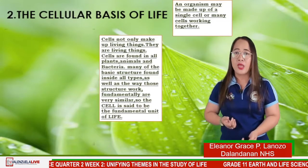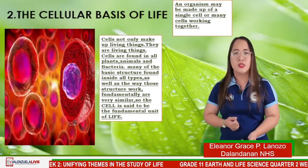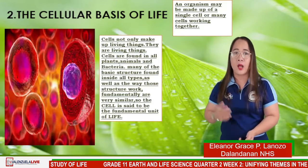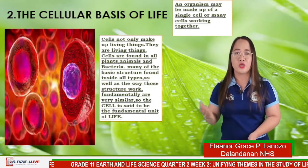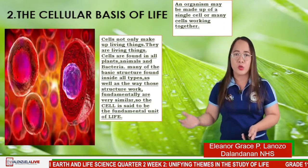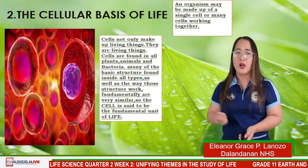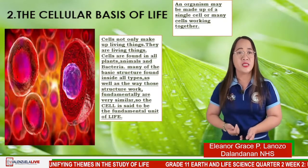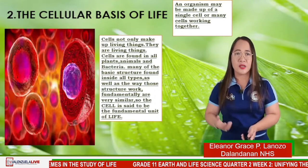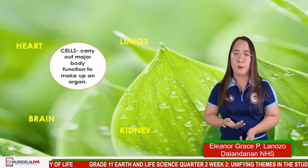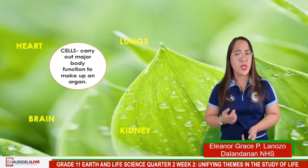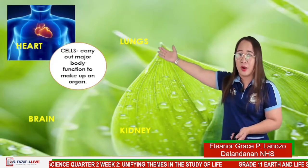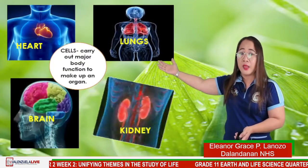For number two, we have the cellular basis of life — the cell. Cells not only make up living things; they are the living things. They are found in all plants, animals, and bacteria. Many of the basic structures found inside all types of cells, as well as the way those structures work, are fundamentally very similar. The cell is said to be the fundamental unit of life. An organism may be made up of a single cell or many cells working together. These cells carry out major body functions to make up organs — like the heart, our lungs, our brain, and our kidneys — all made up of cells.